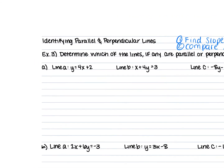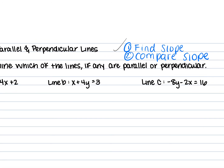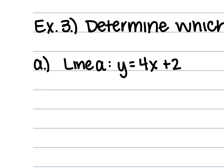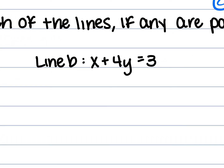Let's identify parallel and perpendicular lines. First step: find the slope of lines A, B, and C. Line A: the slope is four, because the equation is already in y equals mx plus b form — slope-intercept form. Line B is tricky because it's not in slope-intercept form. We need to convert it. Subtract x from both sides to isolate y.